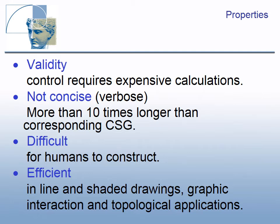Complex BREPs are difficult for humans to construct. This representation is efficient in line and shaded drawings, and also good for graphics interaction, such as edge selection and moving, and topological applications, for example to calculate the solid genus using Euler's formula.